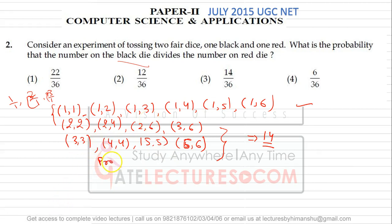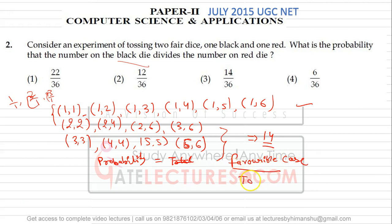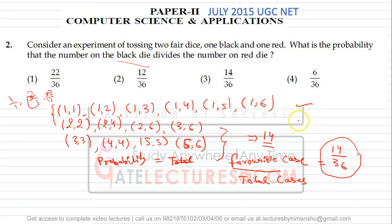Probability equals favorable cases divided by total cases. The favorable cases are 14 and total cases are 36. So the answer is 14/36. This is the probability that the number on the black die divides the number on the red die.